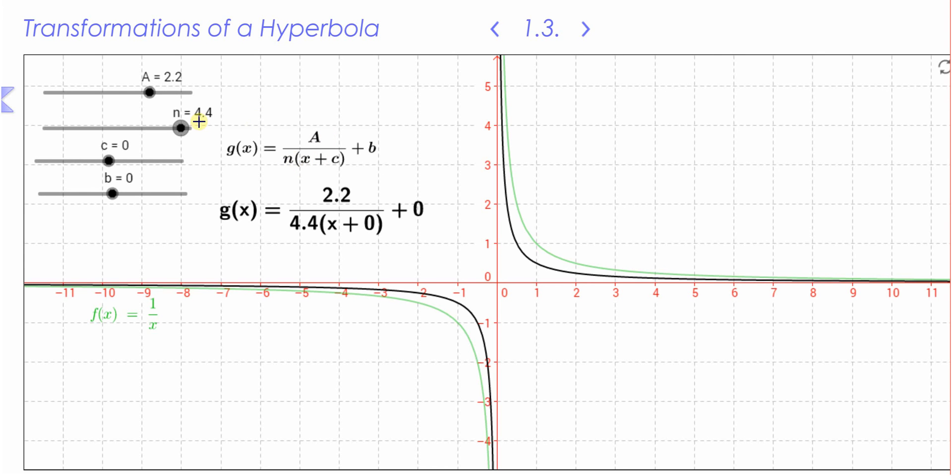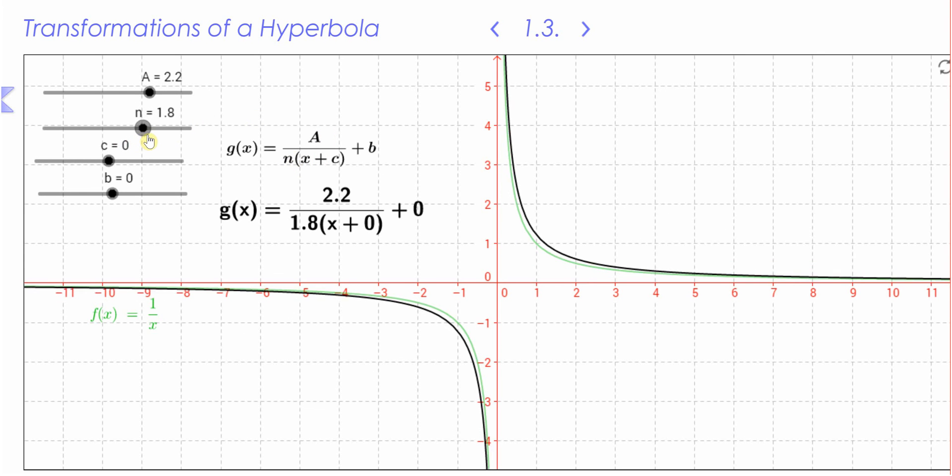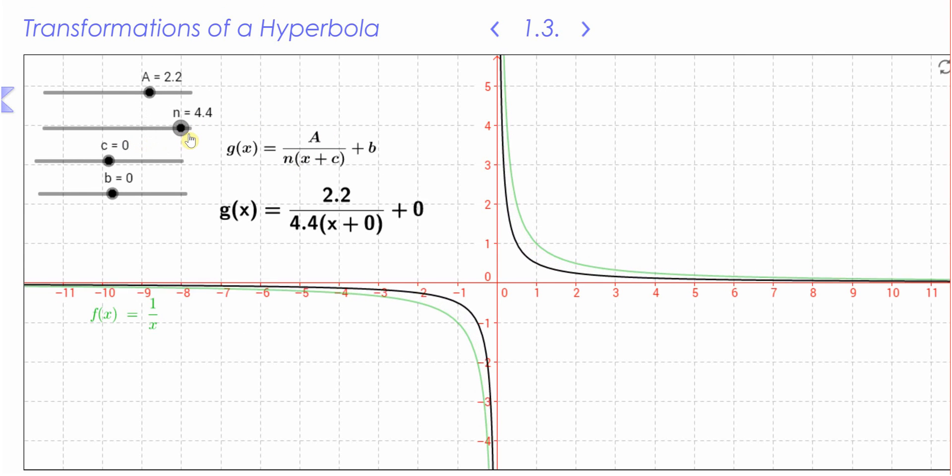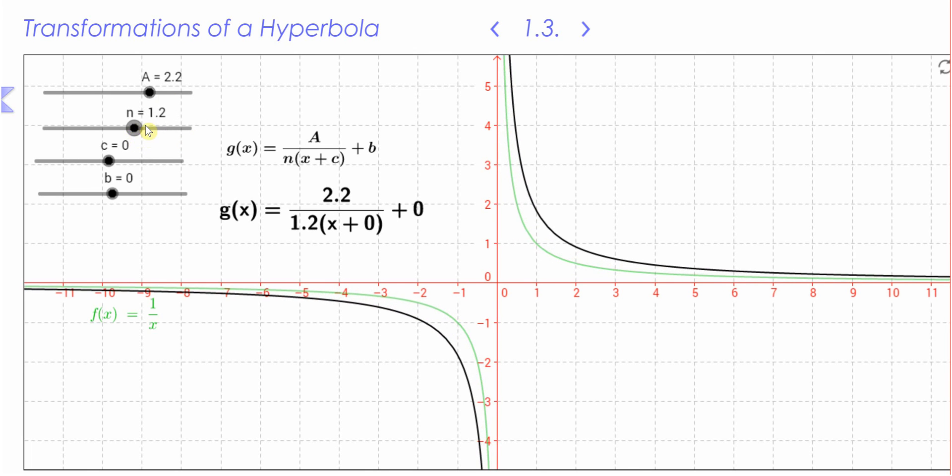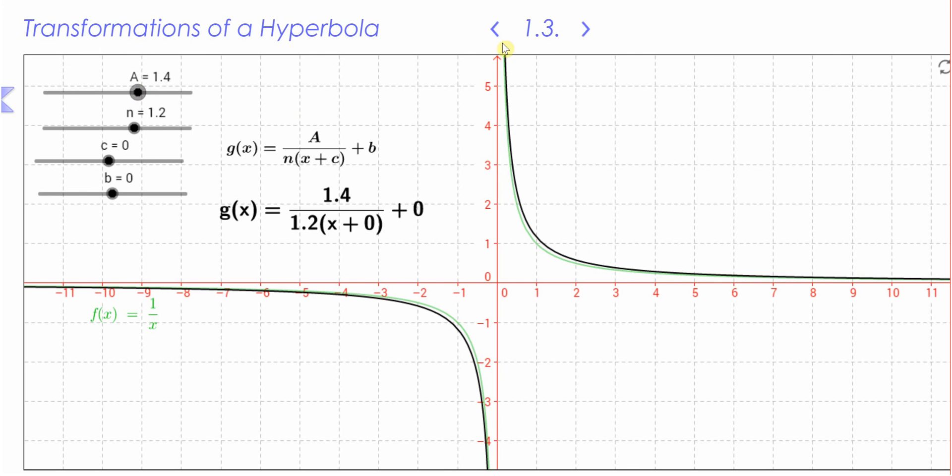You can see that as you're increasing the value of n, those y-coordinates are getting smaller. I'll put that back to one. Actually, I won't bother. Let's go to another graph.